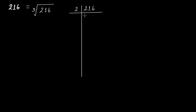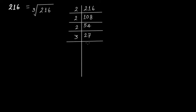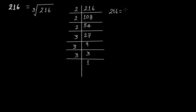Dividing 216: 216 ÷ 2 = 108, 108 ÷ 2 = 54, 54 ÷ 2 = 27, 27 ÷ 3 = 9, 9 ÷ 3 = 3, 3 ÷ 3 = 1. So 216 can be expressed in terms of prime factors as 2 × 2 × 2 × 3 × 3 × 3.